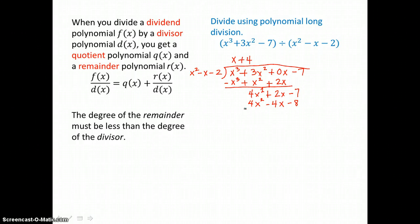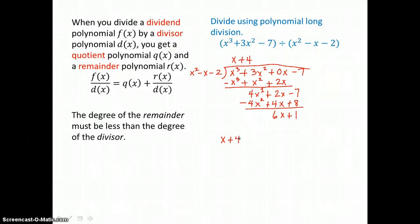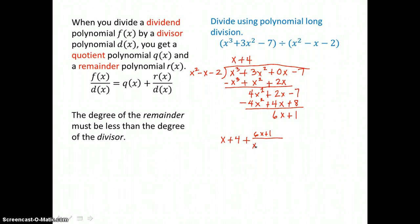I'm ready to subtract, but I'm going to change the signs and add, so the first column sums to 0. 2x and 4x is 6x. Negative 7 and positive 8 is positive 1. Once my remainder is 1 degree less than my divisor, I know I'm done dividing. The quotient is x plus 4 plus the remainder 6x plus 1 over the divisor x squared minus x minus 2.